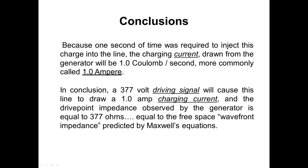Because one second of time was required to inject this charge into the line, the charging current drawn from the generator will be 1.0 coulombs per second, more commonly known as 1.0 amperes. In conclusion, a 377 volt driving signal will cause this line to draw a 1.0 amp charging current, and the drive point impedance observed by the generator is equal to 377 ohms, equal to the free space wavefront impedance predicted by Maxwell's equations.